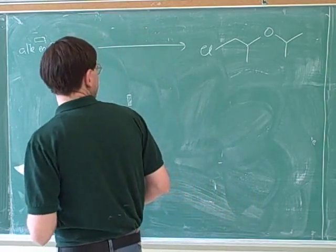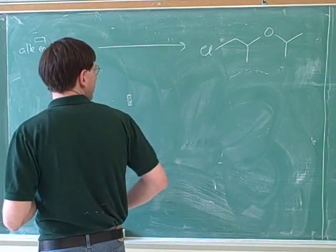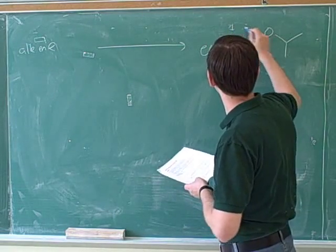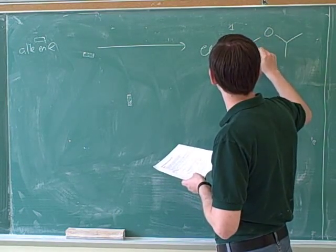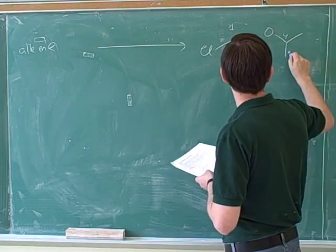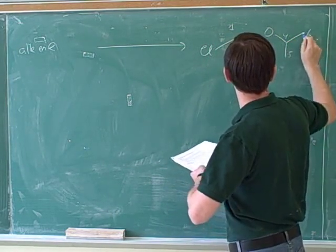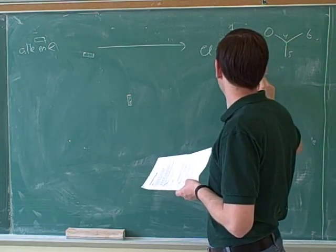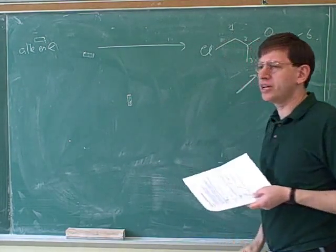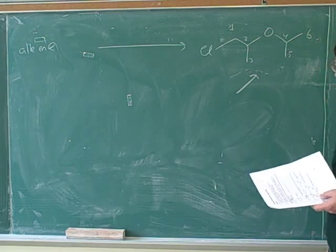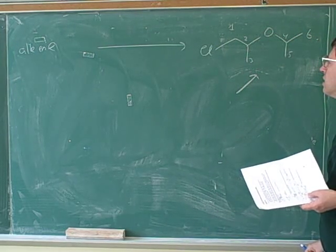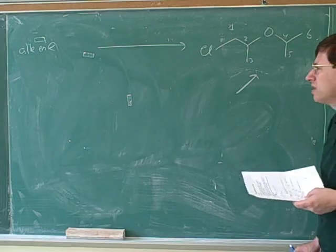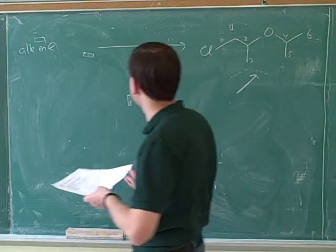So let's see. Let's number our carbons here: one, two, three, four, five, six. So doing retrosynthesis, it seems like it's clear that we used to have an alkene. Where do you guys think the double bond used to be, between which two atoms? Between one and two. Yeah, between one and two.